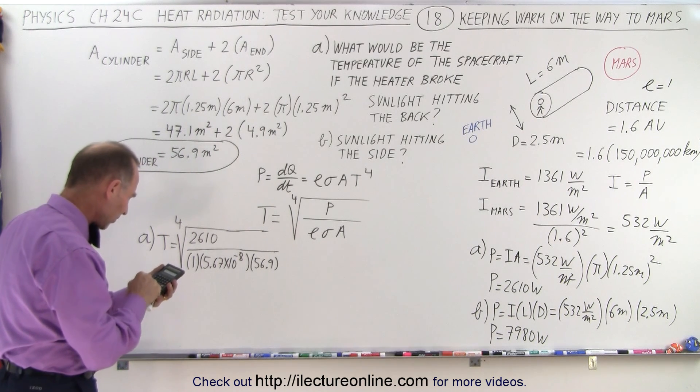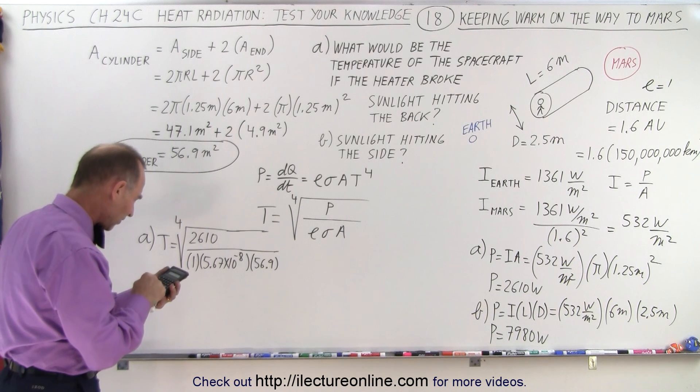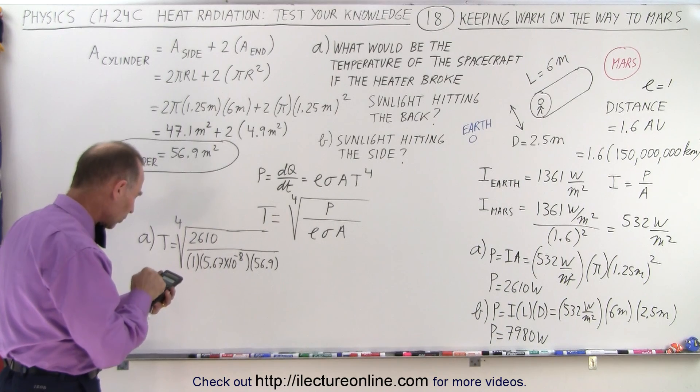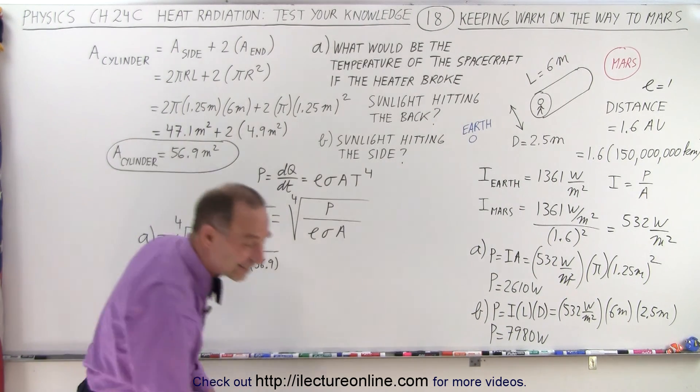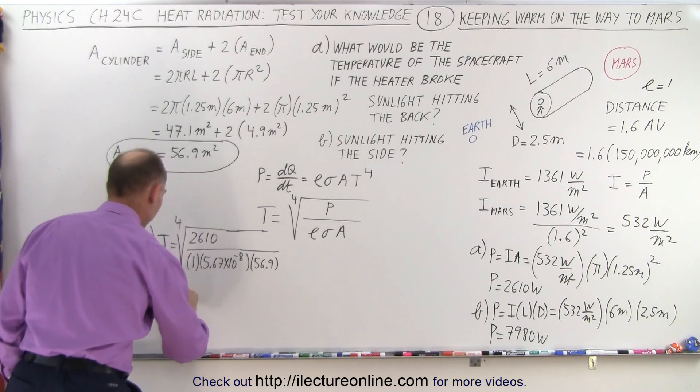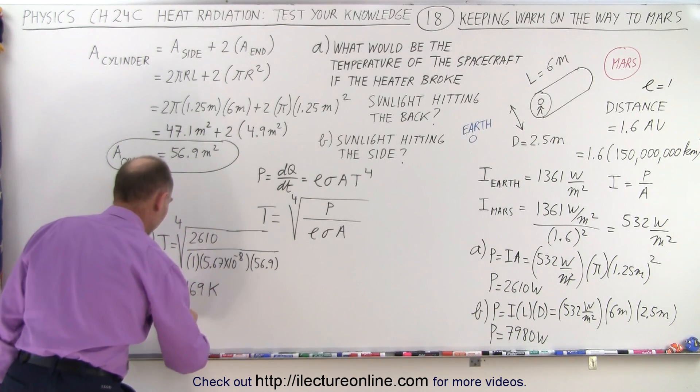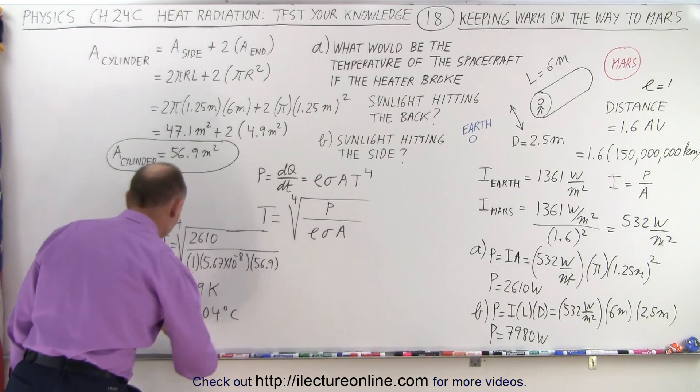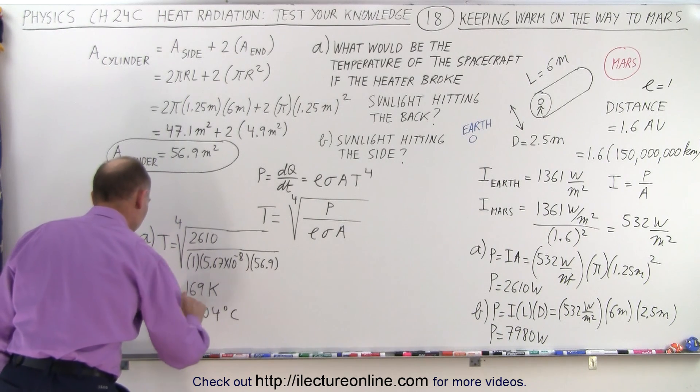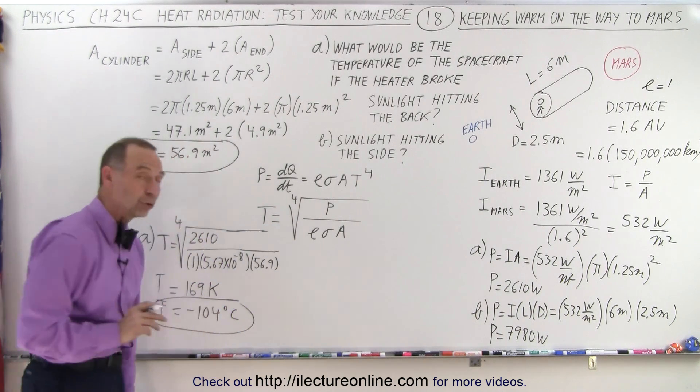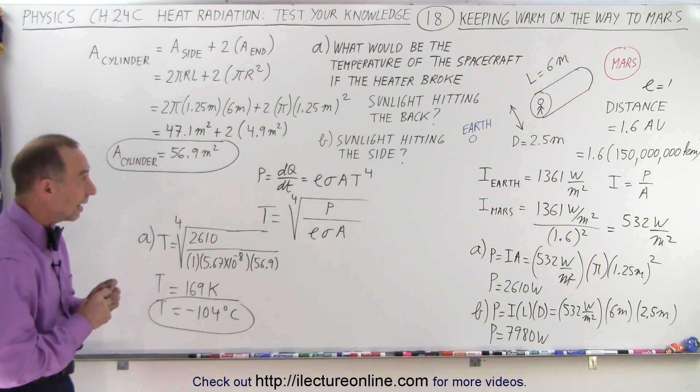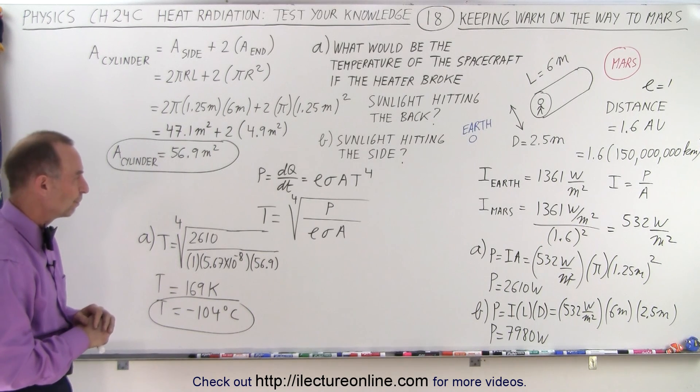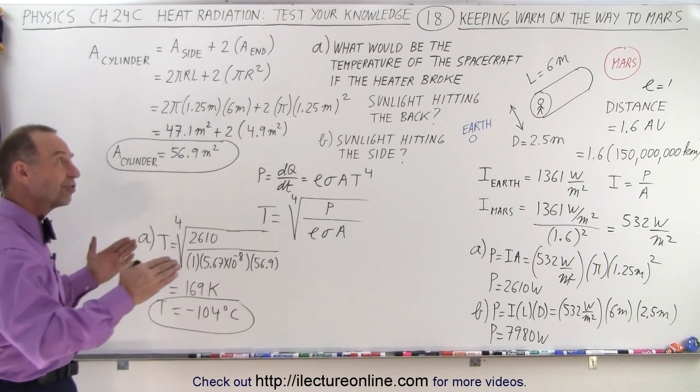2610 divided by 5.67 E to the 8 minus, divide by 56.9, which is the total surface area, and then take the fourth root of that. And the temperature would be 169 Kelvin. So that would be equal to 169 Kelvin, which is equal to minus 104 degrees Celsius. So that would be the temperature of the spacecraft, which would be rather cold. So you can see that the astronauts in there would very quickly freeze to death if they didn't have any power to keep themselves warm. But what if they turned the spacecraft sideways?